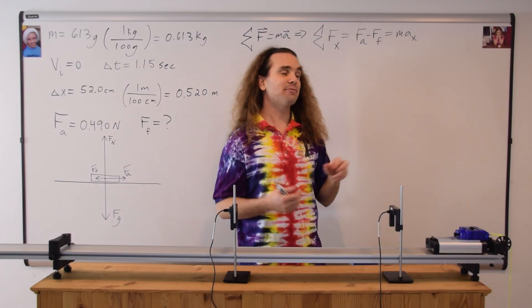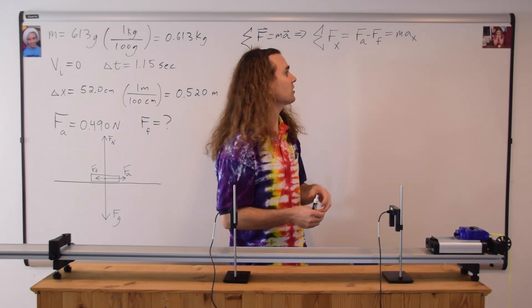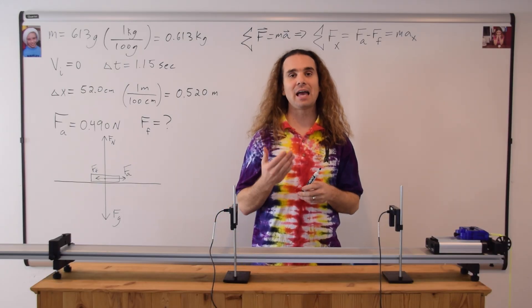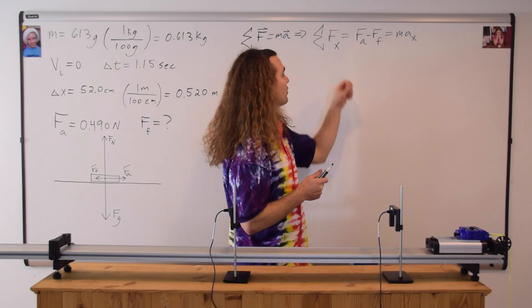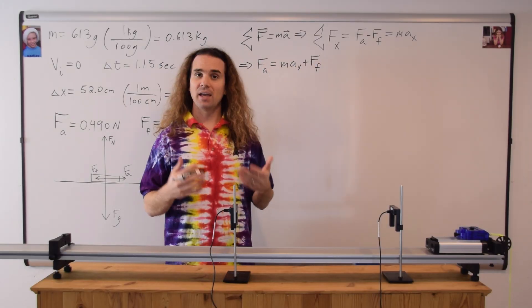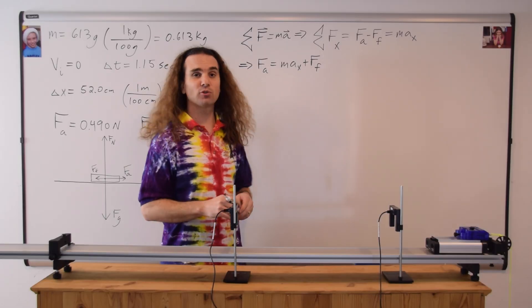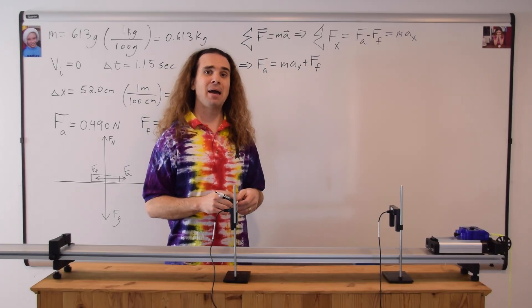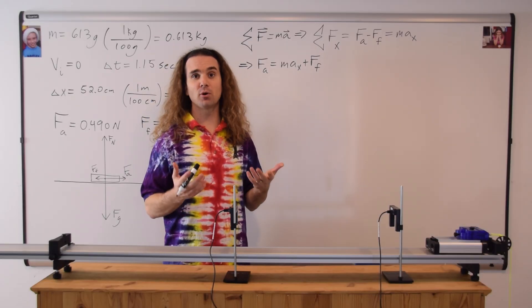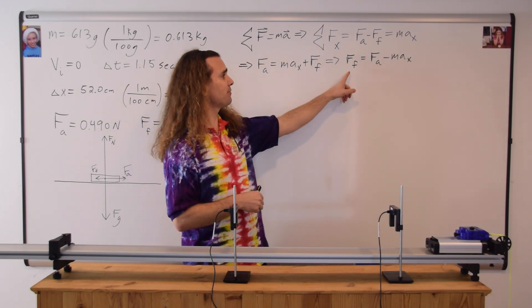And the net force in the x-direction is also equal to the mass of the cart and force sensor times their acceleration in the x-direction. We could solve for the force of friction by adding it to both sides. And we get the force applied is equal to mass times the acceleration in the x-direction, plus the force of friction. And we could subtract the mass times acceleration in the x-direction from both sides. And now we have an equation for the force of friction. It equals the force applied minus mass times acceleration in the x-direction.